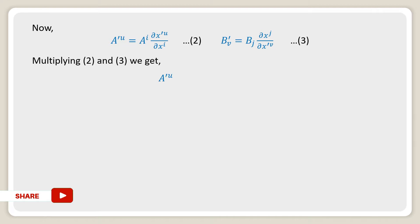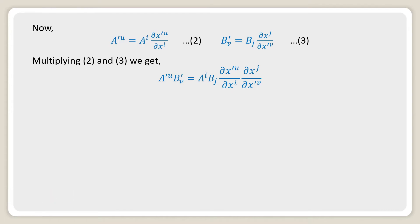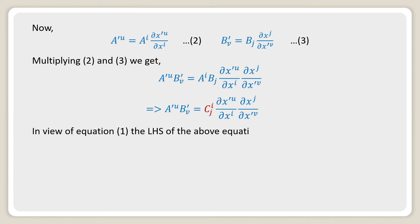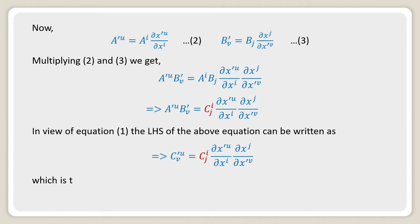Multiplying equations 2 and 3, we get A'^u · B'^v = A^i B^j (∂X'^u / ∂X^i)(∂X^j / ∂X'^v). In view of equation 1, the left-hand side can be written as C'^uv = C_ij (∂X'^u / ∂X^i)(∂X^j / ∂X'^v), which is the transformation law of a mixed tensor of rank 2.